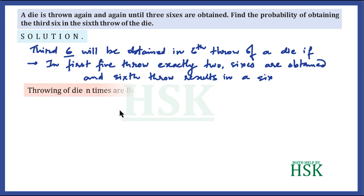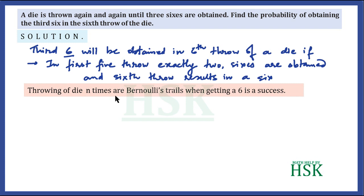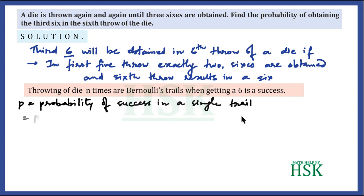Throwing a die n times is a Bernoulli trial where getting a six is a success. There is a fixed number of trials, the experiment ends when three sixes are obtained, getting a six is a success and not getting a six is a failure. The probability of success or failure remains the same for each trial, and each trial is independent.